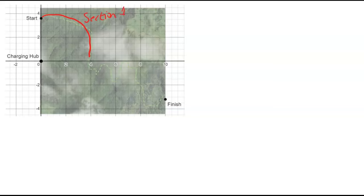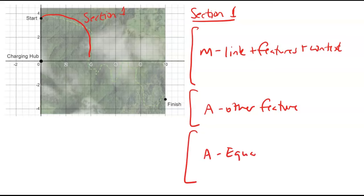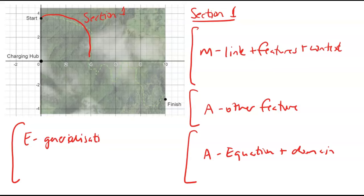I always draw my graph so I can link my answer better. For each section, my first paragraph will be the merit stuff — linking the features of the graph with the context. The next part covers the achieved features. After that, I'll write the equation and domain. Finally, for excellence, I'll need the generalization plus the updated domain. That's my rough plan for all four components, with merit coming first.